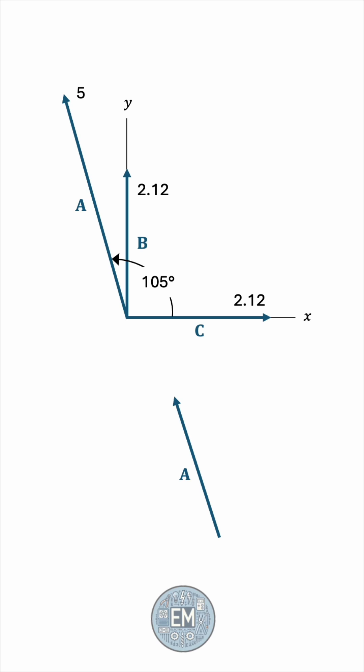From the orientation of a, it's clear that it's going to have a negative x component, but a positive y component. We'll use trigonometry to find these components. One of them will be 5 times cosine the angle, and one of them will be 5 times the sine of the angle.